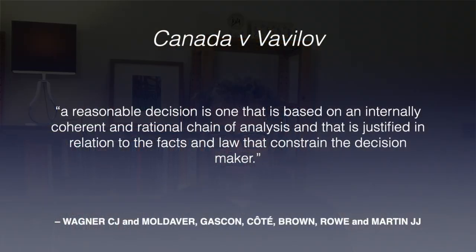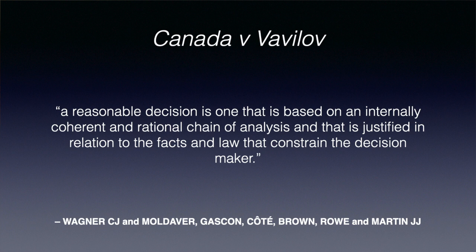How does the reviewing court then know if a decision is reasonable? As the majority put it at paragraph 85: a reasonable decision is one that is based on an internally coherent and rational chain of analysis, and that is justified in relation to the facts and law that constrain the decision maker. Provided that a decision maker meets these standards, the reviewing court defers to the decision of an administrative body. In this respect, the standard of reasonableness as set out in Vavilov is consistent with that of Dunsmuir. Like Dunsmuir, Vavilov emphasises that reasonableness review is concerned with ensuring that decisions of administrative agencies live up to standards of justification, transparency and intelligibility.